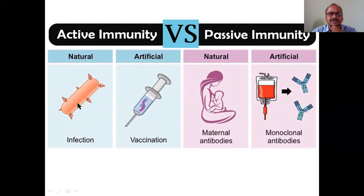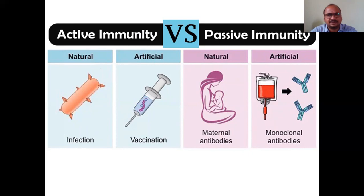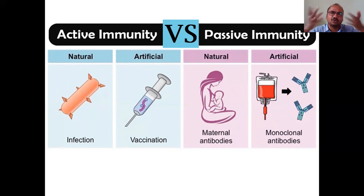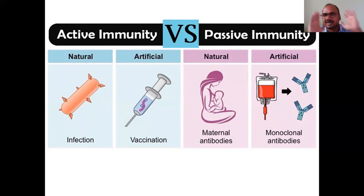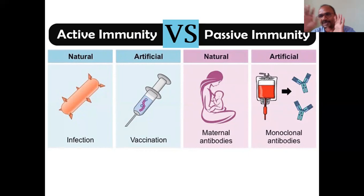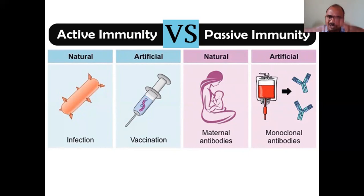Suppose coronavirus comes and infects a person. Active immunity present in his body will develop - it fights and kills the corona completely. Those with high active immunity need not take vaccines. But we don't know whether our body has high, medium, or low immunity. So if corona enters naturally - any virus or bacteria which enters naturally into the body - our body produces antibodies against it. If it is killed, that is called natural immunity.